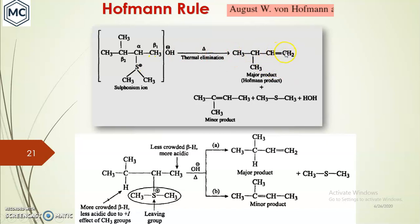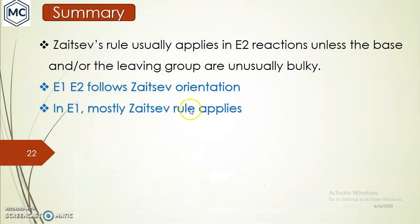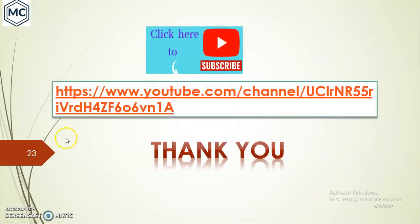Another example: if you take this compound and do thermal elimination, you get the less substituted product as the major one. The secondary beta hydrogen is more crowded, but the primary hydrogen is less crowded because of the bulky leaving group — that is why the primary hydrogen is eliminated more easily compared to the secondary. In summary, Zaitsev's rule usually applies in E2 reactions unless the base or leaving group are unusually bulky. E2 mostly follows Zaitsev orientation. That is all about Zaitsev and Hofmann rules — thank you for watching.